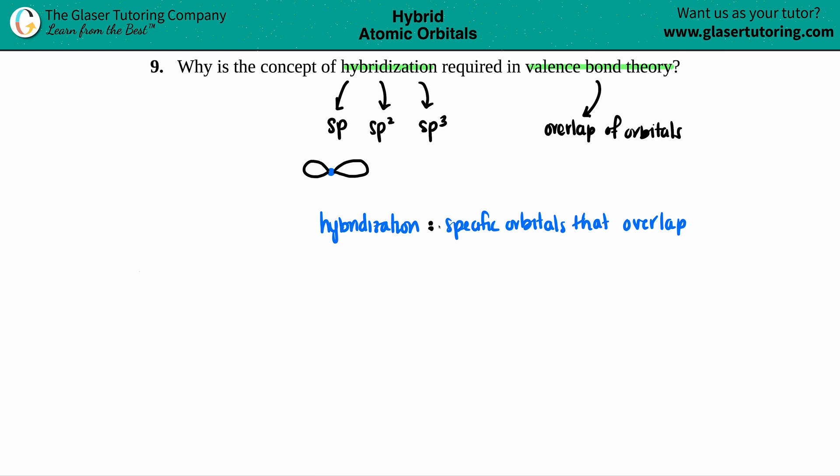specific orbitals that overlap, and because we now are talking about the specific orbitals that are overlapping, we actually can get into bond angles. So hybridization gives the bond angle of the covalent compound